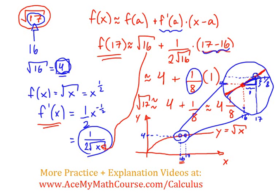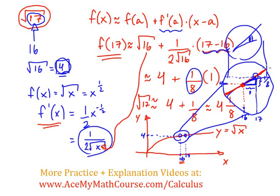So it follows that the approximation is 4 and one eighth. What's the difference between the real curve and the linear approximation? It'll be very slight — something like this. If we plug the square root of 17 into a calculator, it's going to be very, very close to 4 and one eighth. Hopefully that made great sense.